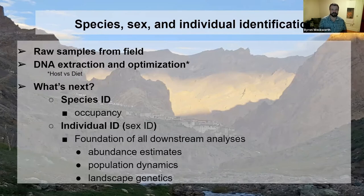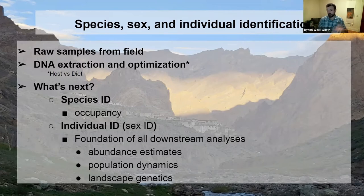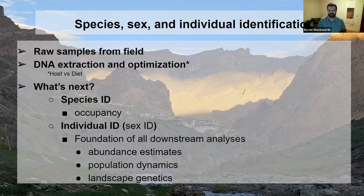Just to review where we're starting from: we got raw samples from the field — literally scat — and we've now extracted DNA from that. The raw lab sample is DNA of unknown origin. Bear in mind that what I'm talking about in the next 15-20 minutes is really emphasizing getting the host of that fecal DNA sample, whereas Charlotte will talk about what if we don't want the host but rather what's been eaten in that scat.